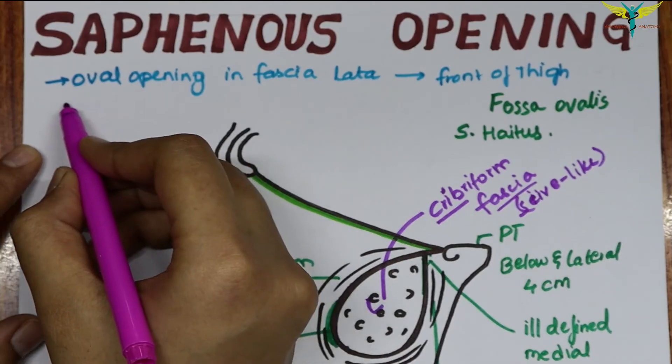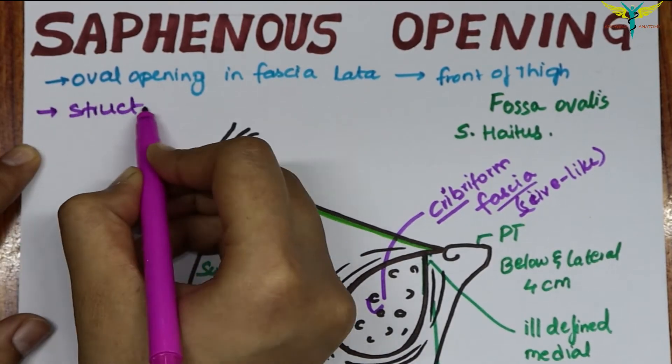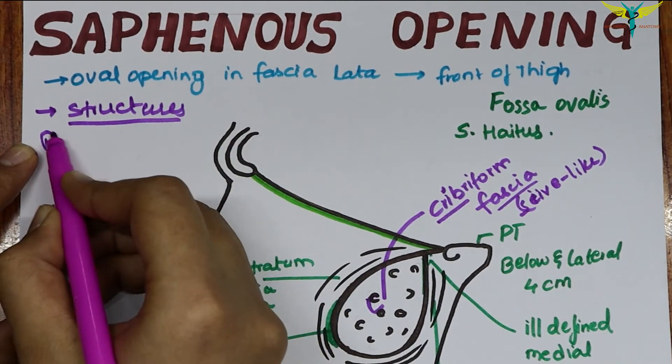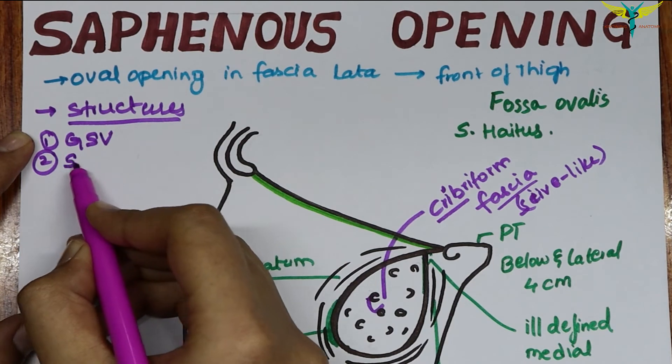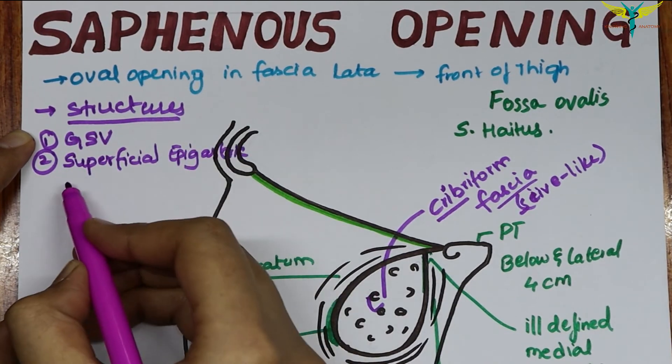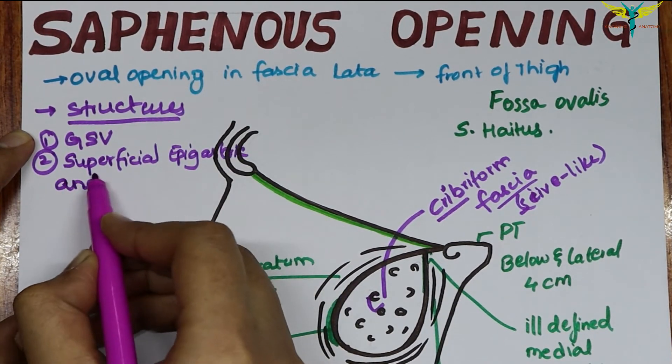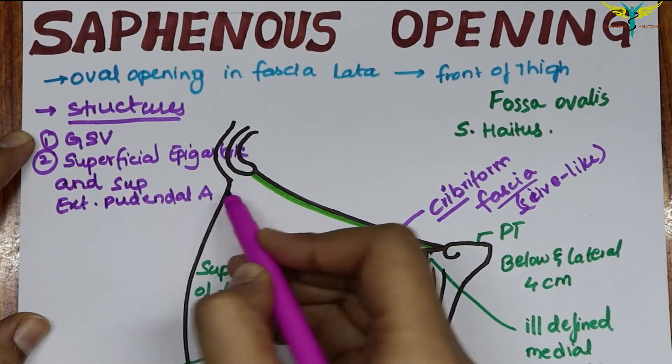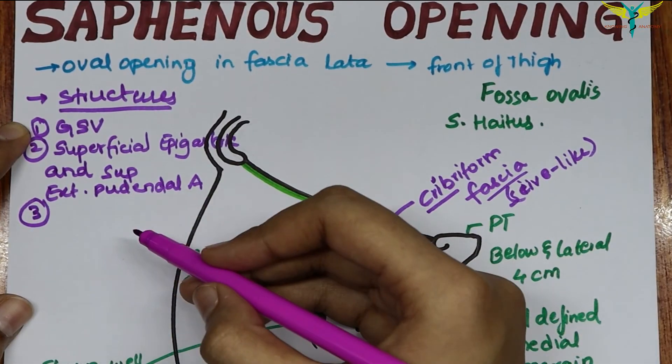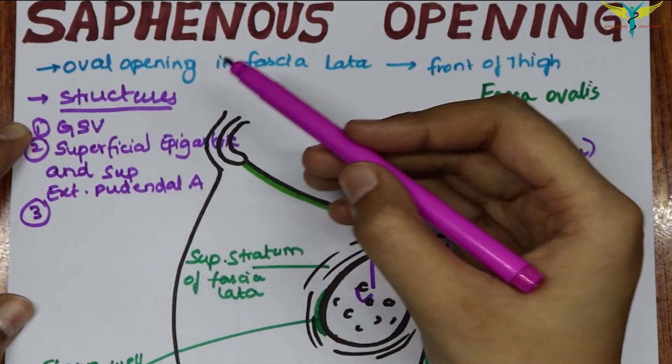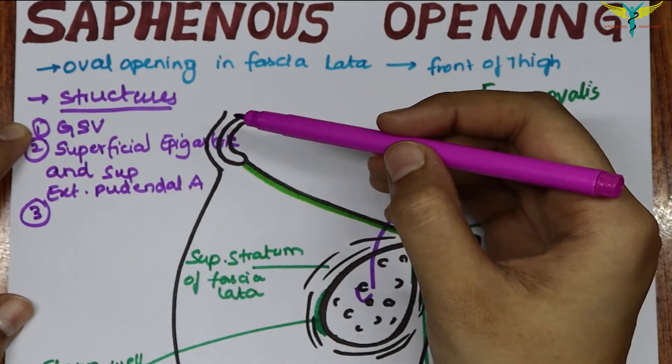The structures passing through the saphenous opening are the great saphenous vein (GSV), the superficial epigastric and the superficial external pudendal artery. Those are the branches of the femoral artery, and a few lymph vessels that connect the superficial and the deep inguinal lymph nodes.